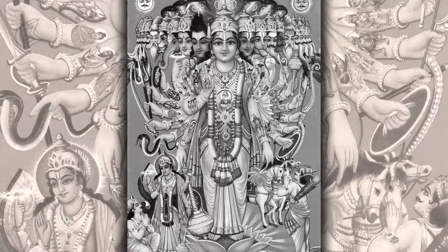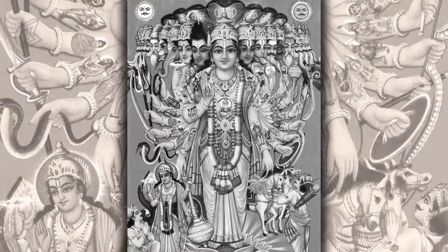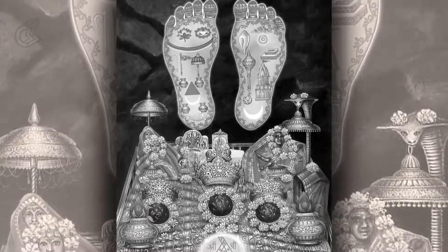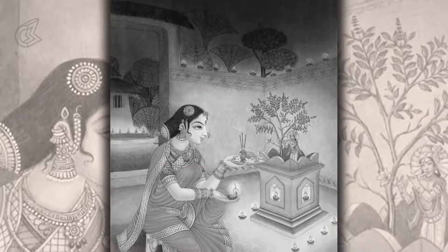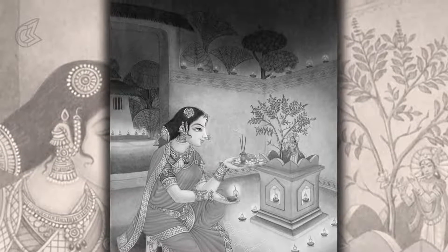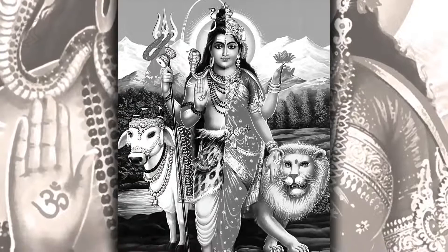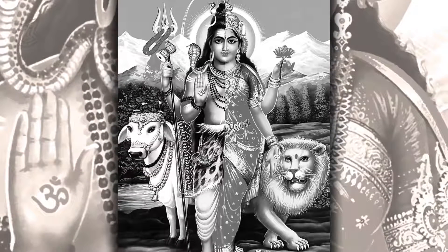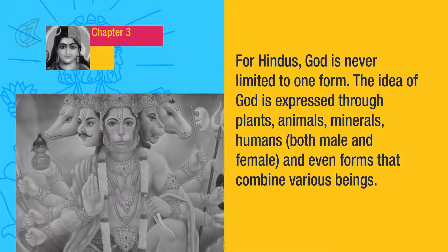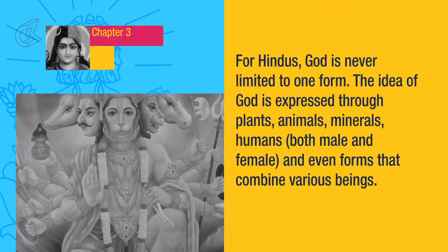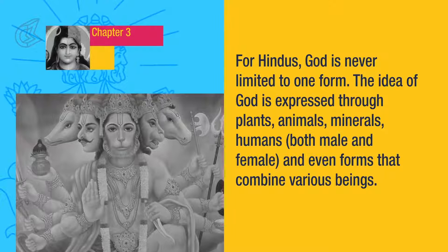God in Hinduism can be Nirgun, without form, or Sagun, with form. Any representation of God with form is bound to be imperfect, as no form is perfect. If God is visualized as a plant, it excludes animals and minerals. If visualized as human, it excludes plants and animals. If human, should it be a man, a woman, or a combination of both? For Hindus, God is never limited to one form. The idea of God is expressed through plants, animals, minerals, humans both male and female, and even forms that combine various beings.